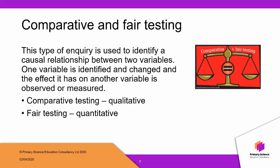Then we have comparative and fair testing. This is where we deliberately change one thing and see what effect it has on something else — changing one variable and seeing what it does to another. A comparative test is where the variable you're changing is qualitative — something in words, like the type of material, size category, or shape — and the data would be presented as a bar chart. A fair test involves changing something in a quantitative fashion, such as measuring size, so the data would be presented as a line graph.